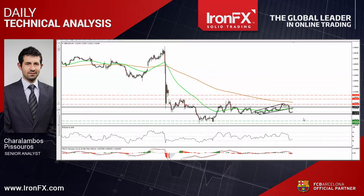However, for now, our short-term oscillators give evidence that a corrective bounce could be looming before the next negative leg. The RSI rebounded from near its 30 line, while the MACD, although negative, shows signs that it could turn up again.